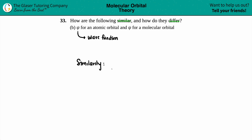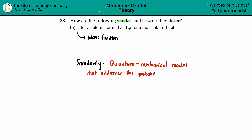So the similarity is what a wave function actually is. A wave function is a quantum mechanical model or construct — it's a quantum mechanical model that addresses the probability of where an electron is located.